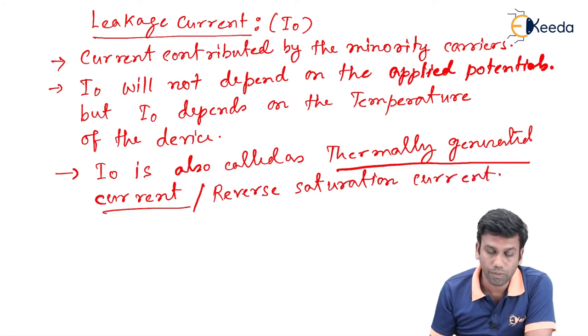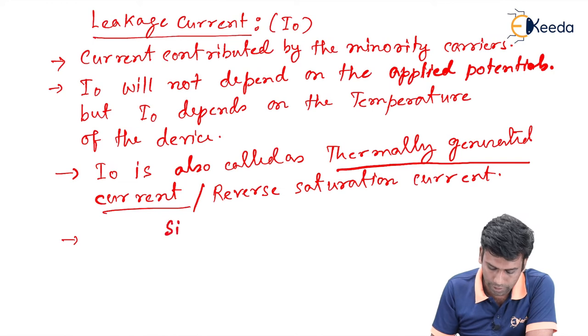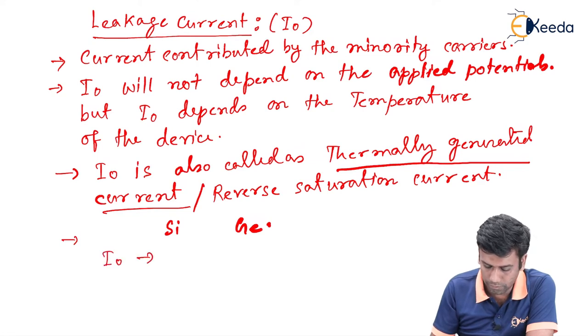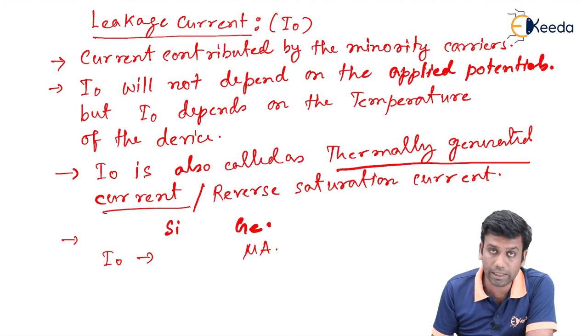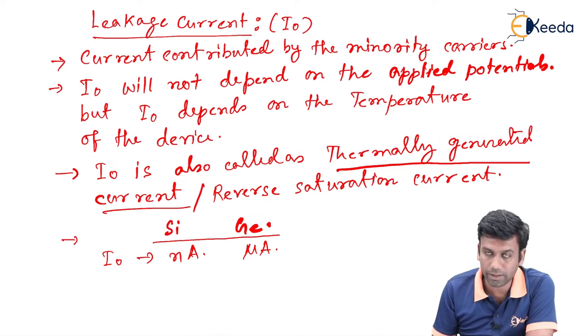According to our previous discussion, the general semiconductors we have taken as silicon and germanium. For germanium, the I0 value is of the order of microampere, and for silicon, it is nanoampere. So we can say that in silicon, the leakage current I0 has a very low value, but germanium has a very high value.